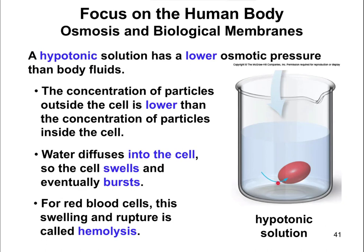So water goes into the cell. The problem with this is the cell membrane surrounding the cell is going to be pushed larger and larger as more and more water goes in. There's not room for the water, so that causes the cell membrane to swell and swell, and eventually it'll burst. For red blood cells, the swelling and eventually rupturing of those cells when placed in a hypotonic solution is called hemolysis.